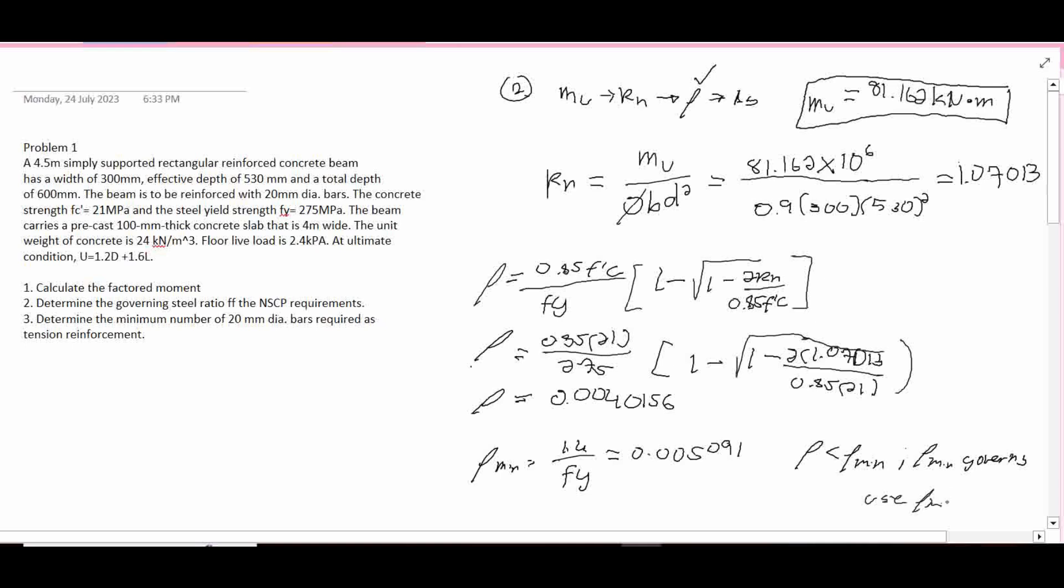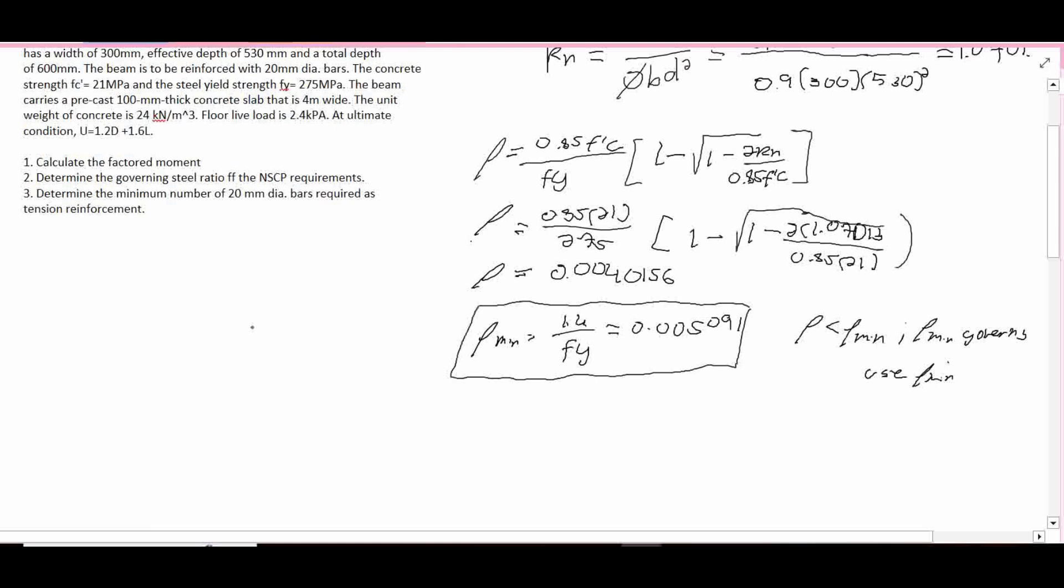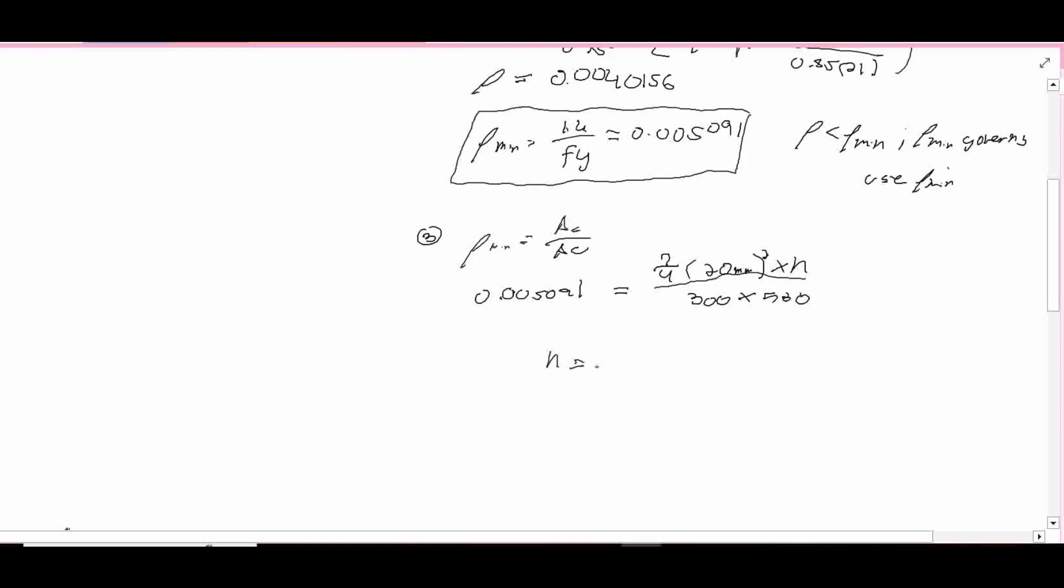This will be our answer for number 2. For number 3, determine the minimum number of bars required as tension reinforcement. Because we will have to use the RO min, so our formula here should be RO min equals to area of steel over area of the concrete. So that is 0.005091 equals to area of steel, that's pi over 4 times the 20 mm squared times the number of bars, divided by area of our concrete, which is width times the effective depth, 300 times 530. So our N is 0.005091 times 300 times 530, all over pi over 4 times 20 squared.